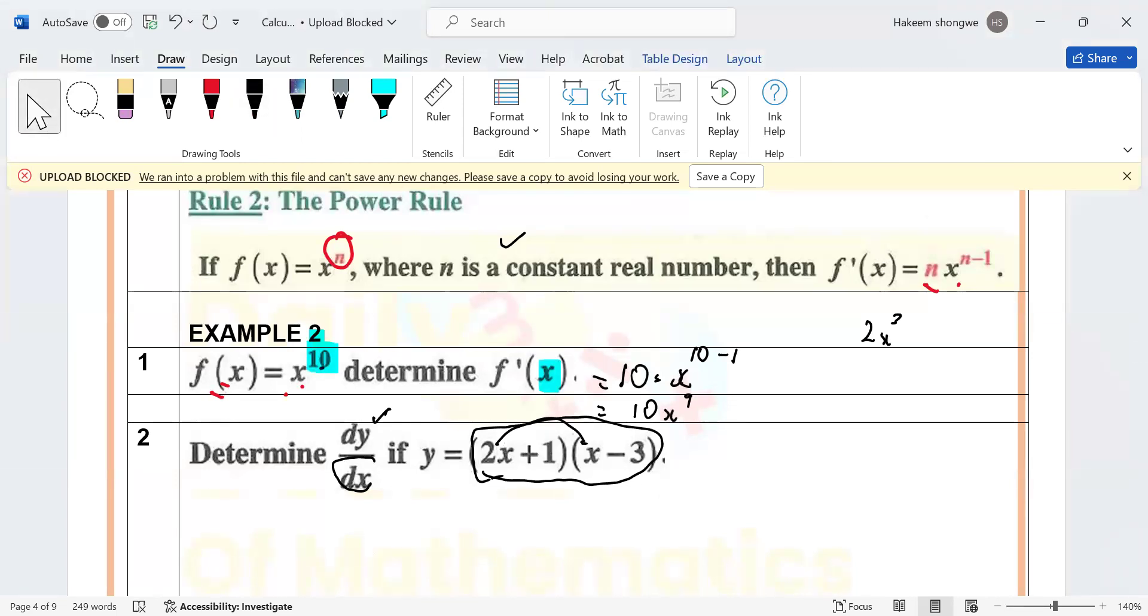We are not differentiating, we are still doing everything that we have learned in earlier grade. You're going to have y which is going to be equal to this multiplied by this one - you get 2x squared. Now this one multiplied by this one, minus 6x. This one multiplied by x, plus x. This one multiplied by this one, minus 3. Are there any like terms? So you're going to have 2x squared minus 5x minus 3.